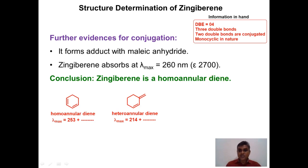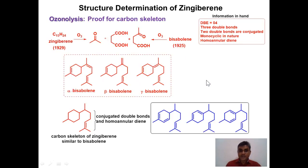In summary so far: zingiberene contains three double bonds, two of which are conjugated and present as a homoannular diene within the monocyclic ring. The next step is to find out the positions of these three double bonds within the overall skeletal framework, which includes one ring.